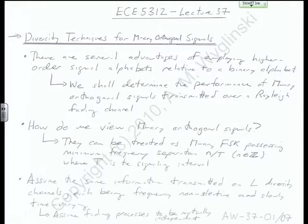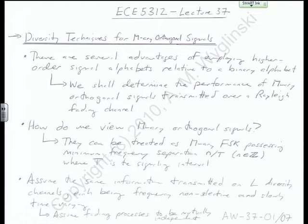It's been a long time since we played with orthogonal signaling in this class. The last time we looked at things like FSK was easily 15 lectures ago, when we came up with the closed form solution for the probability of bit error. We had to assume an M-ary modulation scheme that was orthogonal — that was FSK. We're going to use that same sort of construct here in order to show diversity in action. Even in one of the class problems in the last lecture, we began talking about diversity where FSK was the modulation type used.